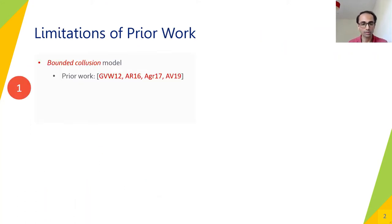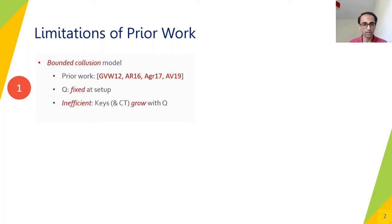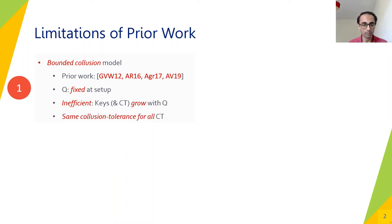The first limitation is that of the bounded collusion model itself, introduced by Gorbunov et al. from 2012, with subsequent work done till 2019 by Anant and Vaikunthanathan. Because Q is fixed at setup, this leads to an inefficiency where all keys and ciphertexts in the system grow with this collusion bound Q. The latest work by Anant and Vaikunthanathan gives an FE scheme where ciphertexts and keys depend only linearly and thus optimally on Q. However, since Q is fixed at setup, this also leads to the same collusion tolerance for all ciphertexts, however sensitive or insensitive the plaintexts are.